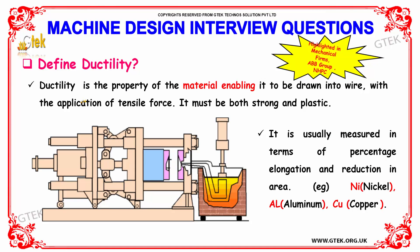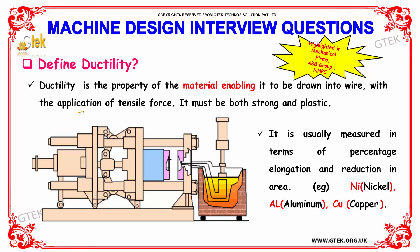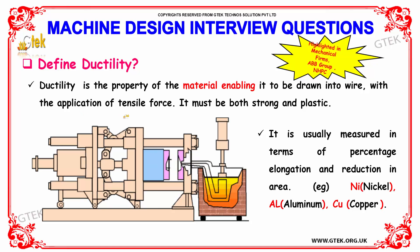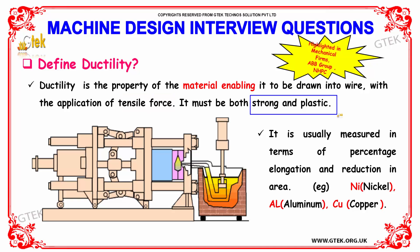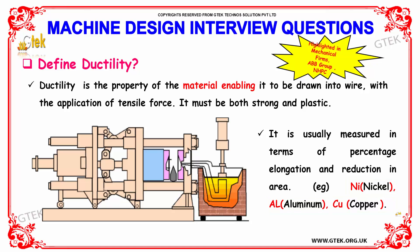Define ductility. Ductility is the property of a material enabling it to be drawn into a wire with the application of tensile force. It must be both strong and plastic. It is usually measured in terms of percentage elongation and reduction in area. Examples include Nickel (Ni), Aluminium (Al), and Copper.